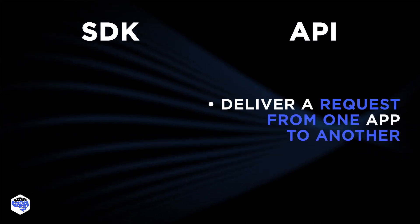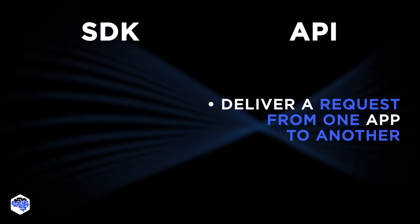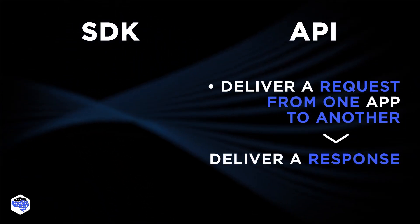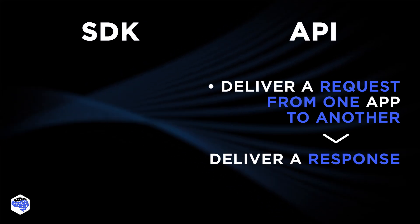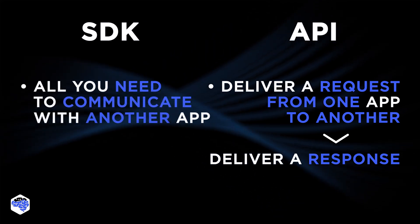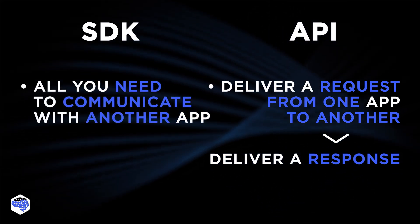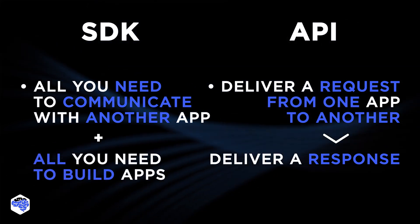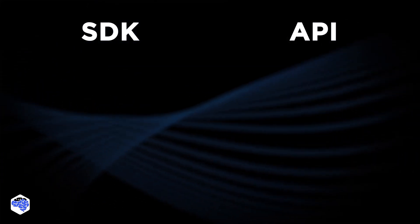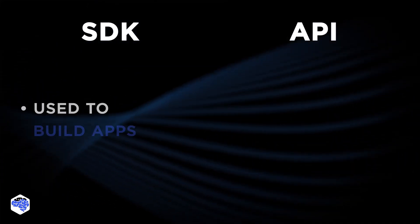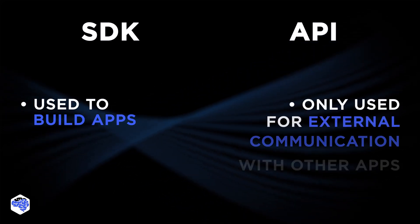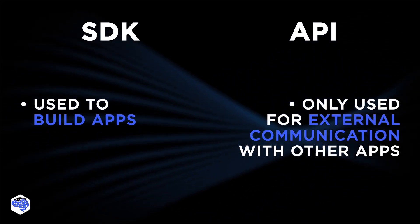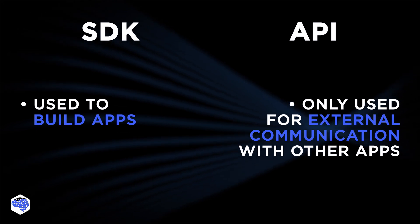APIs deliver a request from one app to another software and deliver a response back to the requesting app, while SDKs contain all you need to communicate with another software and all you need to build software. Developers always use an SDK to build apps, but APIs only come in when there is a need to have external communication with other platforms.